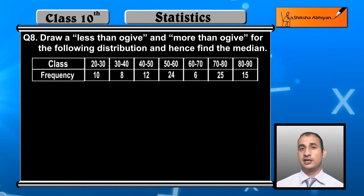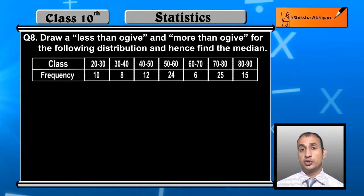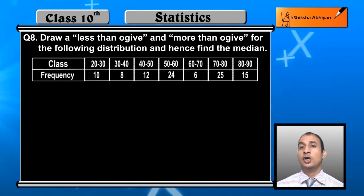We have to recall that for less than ogive and more than ogive, when we have the graph, we have to make the intersecting point, which is the value of the x-axis. We have to start with the data.